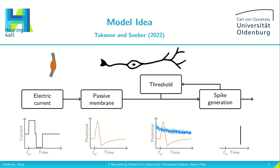If the passive membrane potential is above the threshold a spike is generated. If I run the same model twice I can get slightly different results for the spike time. After a spike is generated, the threshold is adapted to account for pulse interaction phenomena such as refractory period and facilitation.